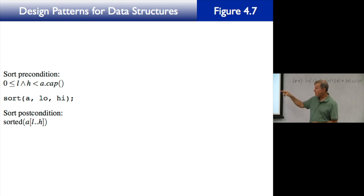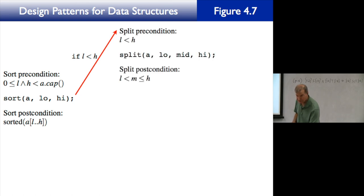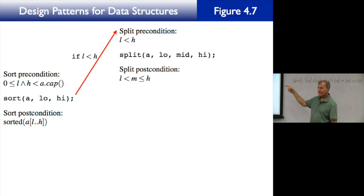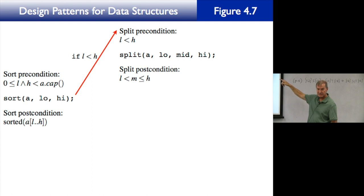So that's the sort precondition. Now what does sort do? It says if low is less than high, and it calls split. So that guarantees the precondition of split. It calls split with A, low, mid, high — and mid is called by reference, so that changes the value of mid. After that, what is the postcondition of split? Can mid ever be equal to low? No — it's got to be greater than. But it can be less than or equal to high. So that's the postcondition of split.